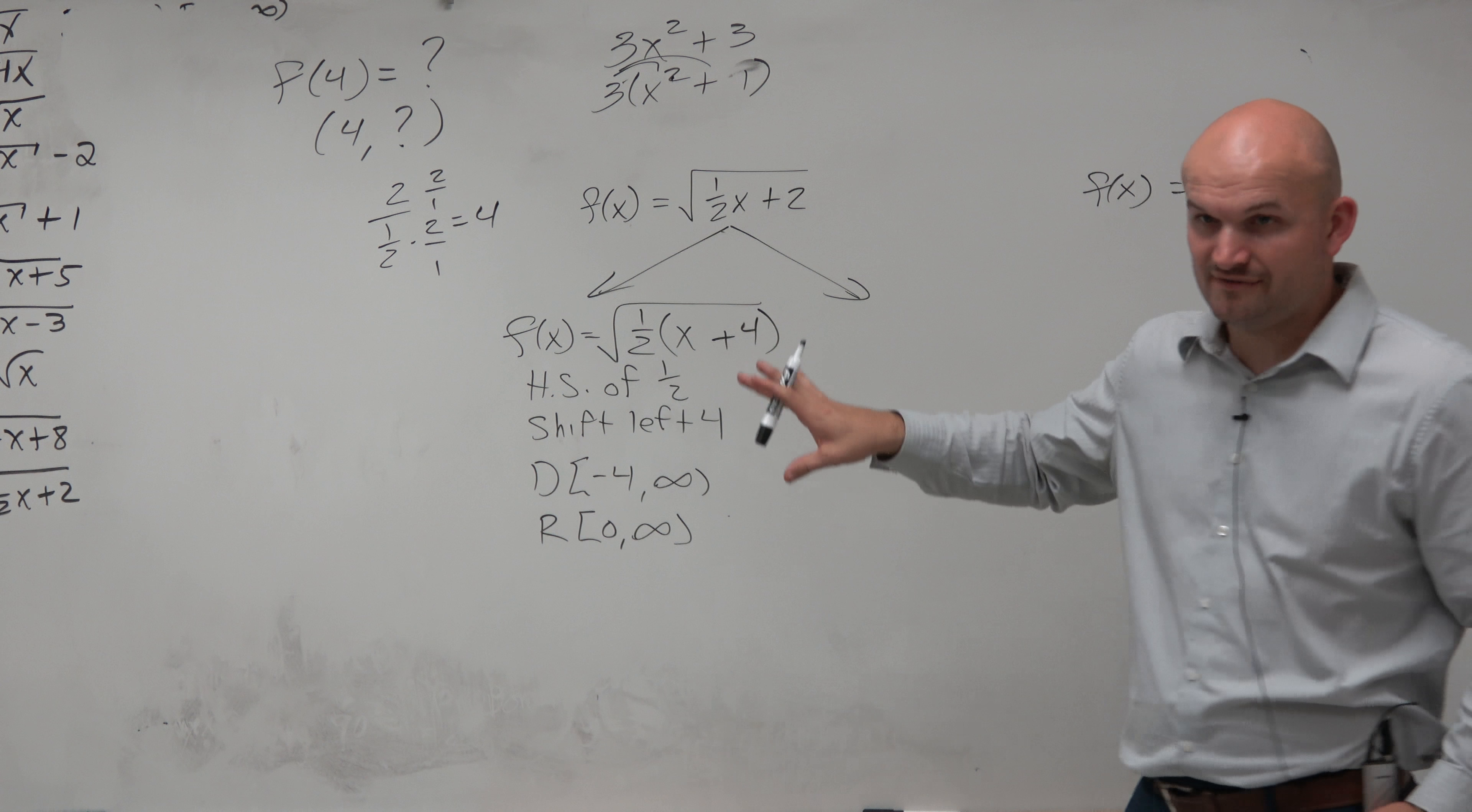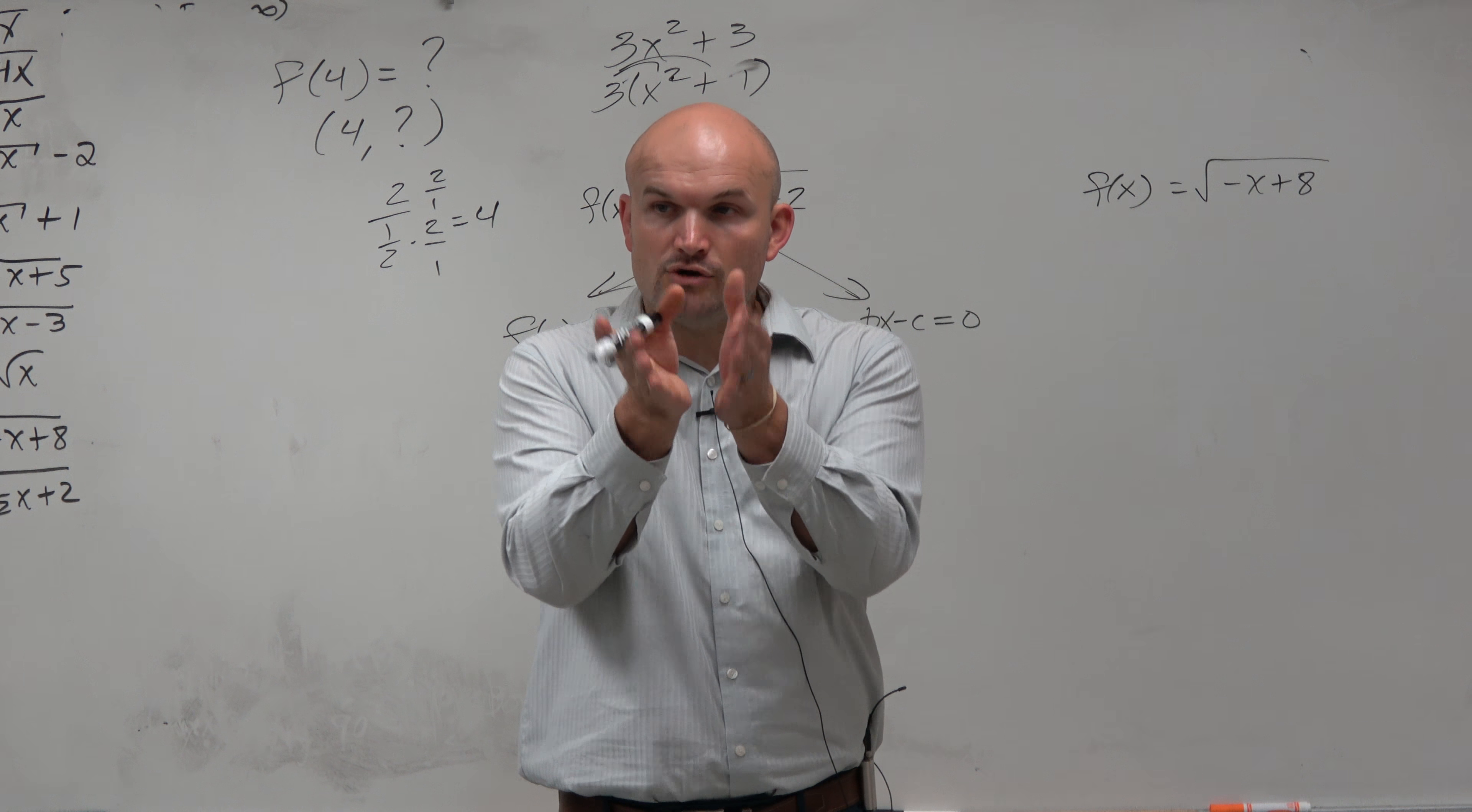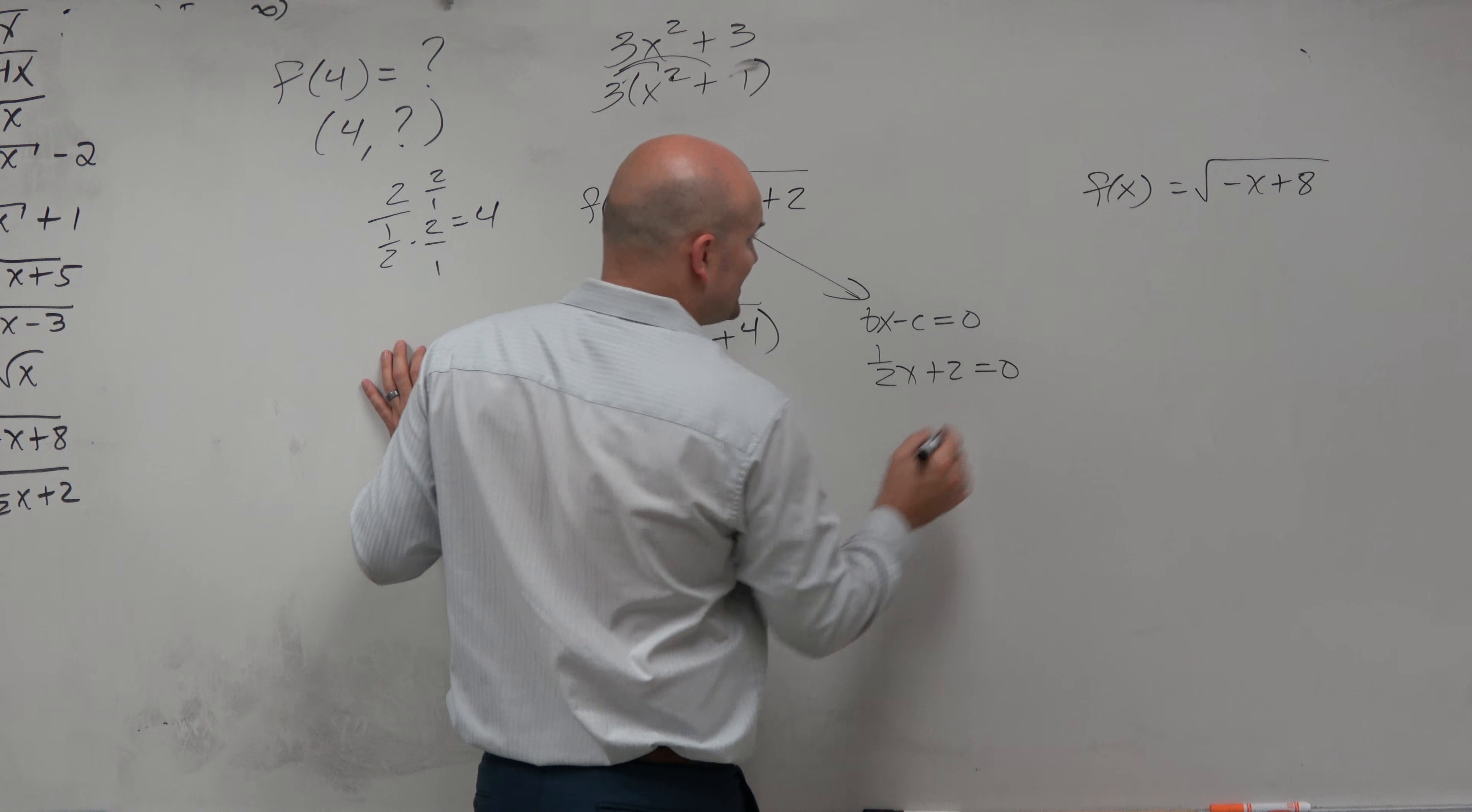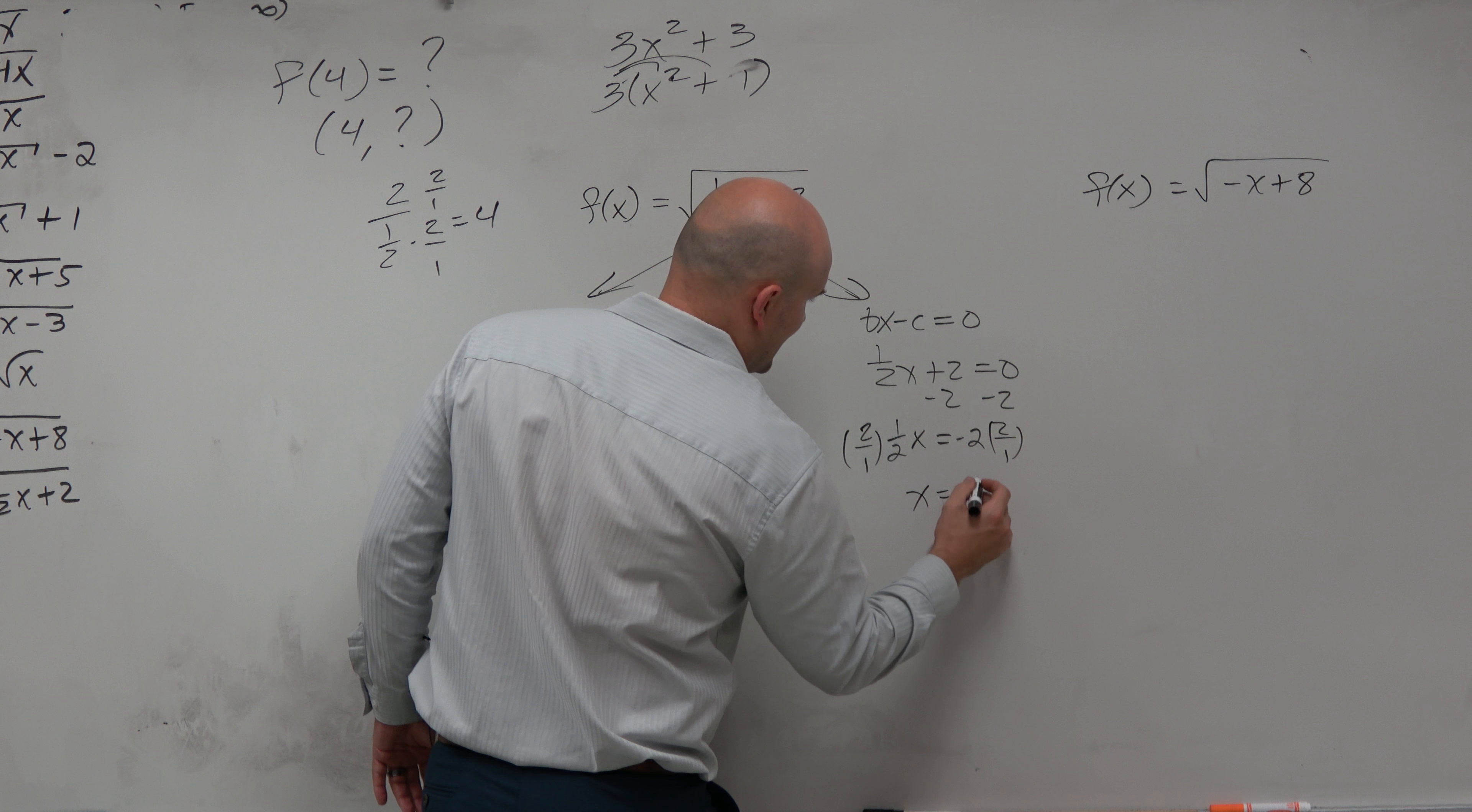The other technique to identify this is to take whatever's inside your function - in this case under the radical, what we'd call the bx minus c - and set that equal to 0. The initial parent function with no transformations is at 0. But whatever we do with bx minus c shifts the graph left to right. So when you take whatever's inside the radical and set it equal to 0, that tells you your new transformation. So I can subtract the 2 on both sides. I get 1 half x equals negative 2. Then to get rid of multiplying by 1 half, I'll multiply by the reciprocal, and I get x equals negative 4.